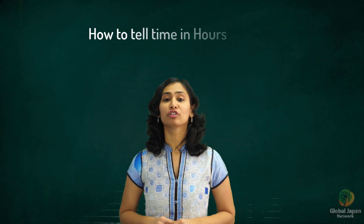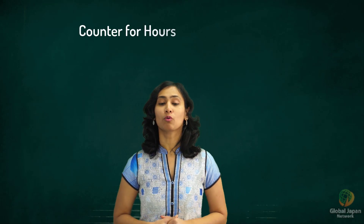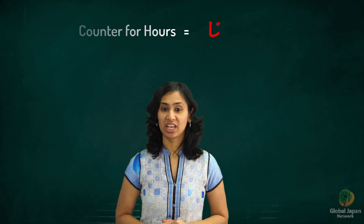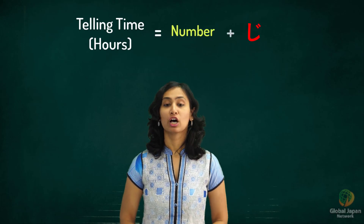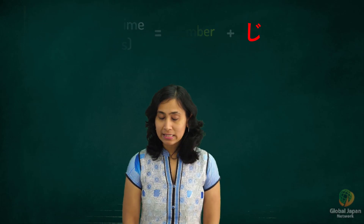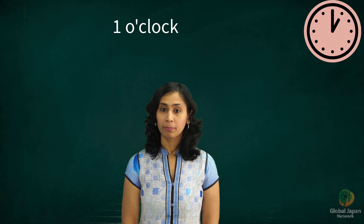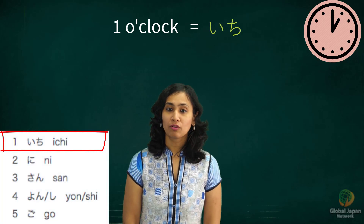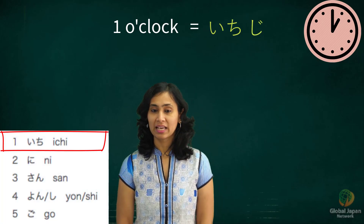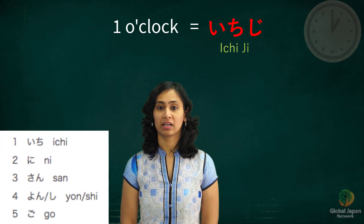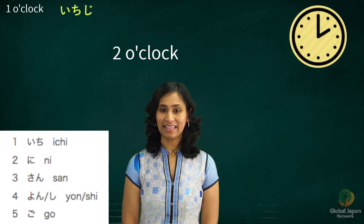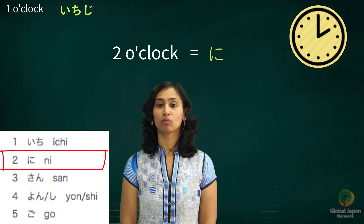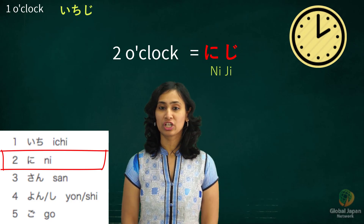If I have to tell one o'clock, the hours counter is Ji. The counter Ji will be added as a suffix to the number. Hence, one o'clock would become Ichi followed by the counter Ji — Ichi Ji. Two o'clock: Ni followed by the counter Ji — Ni Ji.